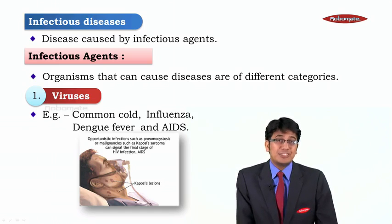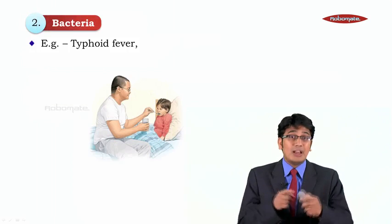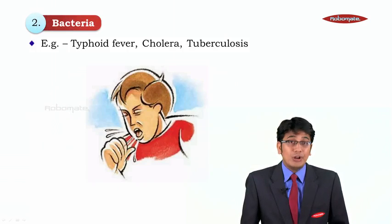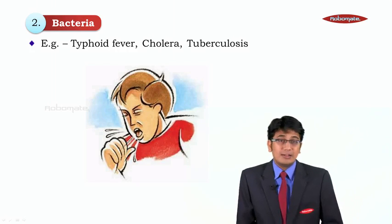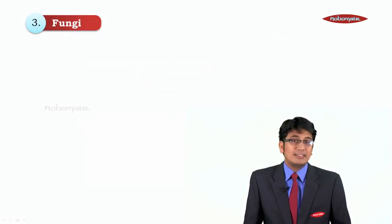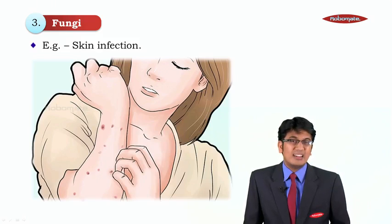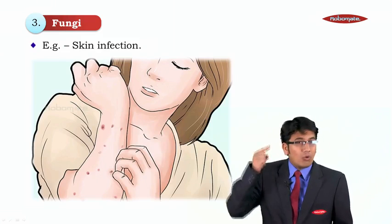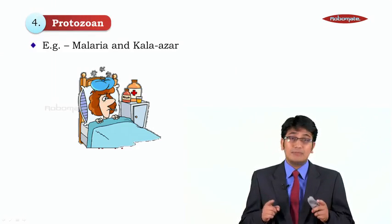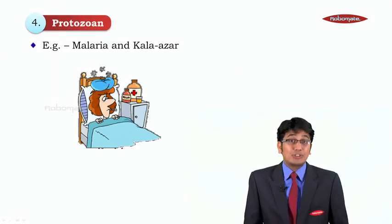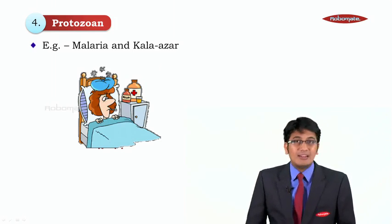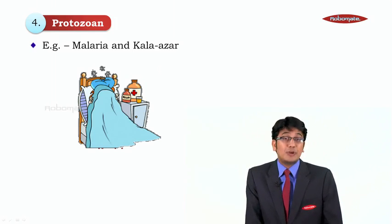The most dangerous viral disease in the world is AIDS — Acquired Immunodeficiency Syndrome — caused by HIV, the Human Immunodeficiency Virus. Next, bacteria can cause typhoid, cholera, and tuberculosis, which is caused by the bacterium Mycobacterium tuberculosis, as well as anthrax. Fungi cause skin infections, producing white patches all over the skin. Protozoa cause malaria — a very common disease spread by the female Anopheles mosquito under unhygienic conditions — and kala-azar, a very dangerous disease caused by a parasite.